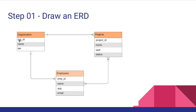Let's look at the attributes for each entity. For an organization, you have a unique organization ID, a name, and a tier that the organization belongs to — for example, free tier, professional, or premium tier — which is chosen when signing up for the application.